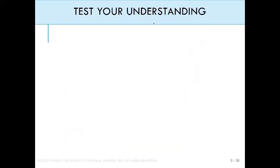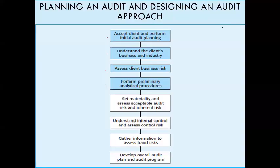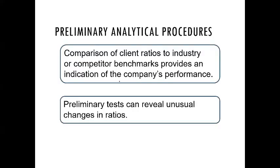The next step is to perform the preliminary analytical procedure. The analytical procedure contains mainly three issues: ratios, comparison of ratios with previous years or with competitors, and comparison with company or auditor expectations. We are seeking unusual items — so we compare the client's ratios to industry benchmarks and competitors to provide an indication of company performance.